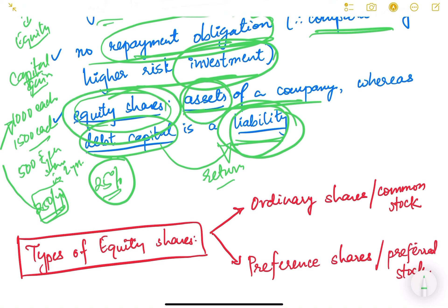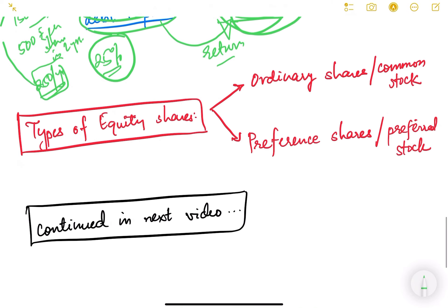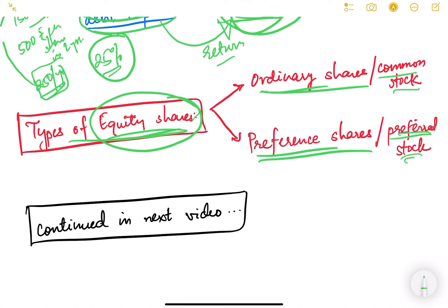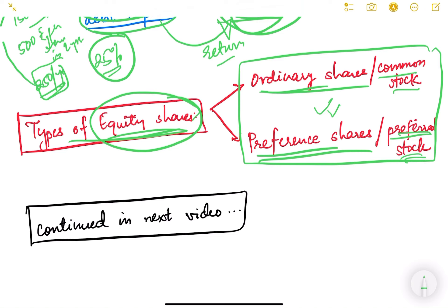There are broadly two types of equity shares: ordinary shares, also known as common stock, and preference shares, also known as preferred stock. We will discuss these in detail in the next video. Thank you.